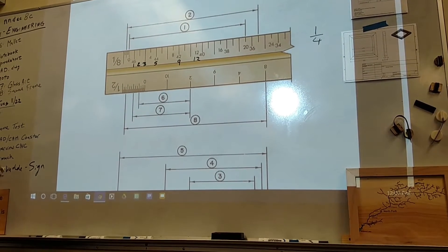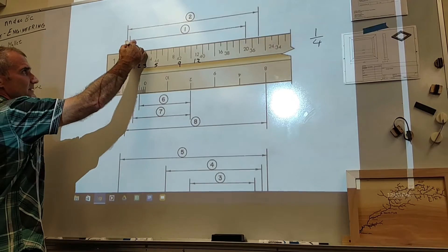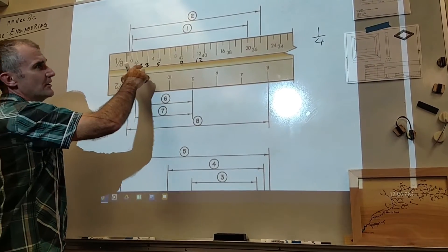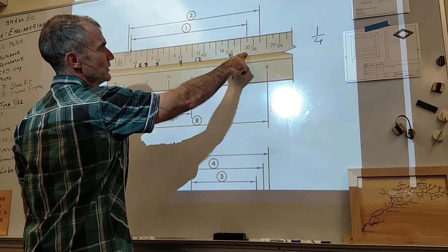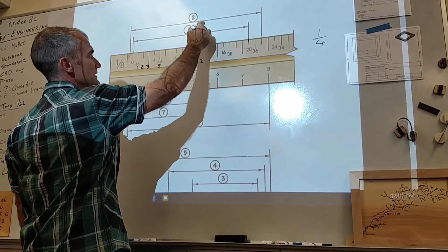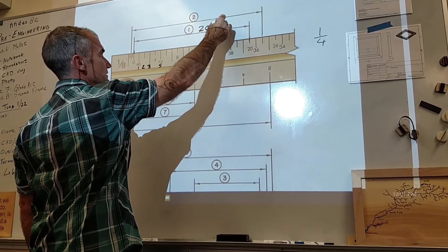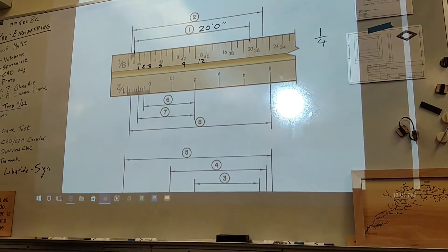So on number one here, I'm looking at, I start right here on the zero, and I go all the way over to the twenty. So number one is twenty feet, zero inches.